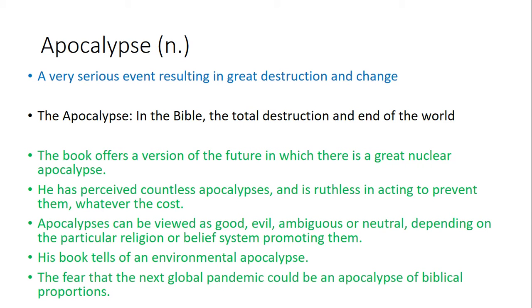Apocalypse — it's a noun meaning a very serious event resulting in great destruction and change. When used with 'the,' it means the total destruction and the end of the world. Examples: Number one, the book offers a vision of the future in which there is a great nuclear apocalypse. Number two, he has perceived countless apocalypses and is ruthless in acting to prevent them, whatever the cost. Number three, apocalypses can be viewed as good, evil, ambiguous, or neutral, depending on the particular religion or belief system promoting them. Number four, his book tells of an environmental apocalypse. Number five, the fear that the next global pandemic could be an apocalypse of biblical proportions.